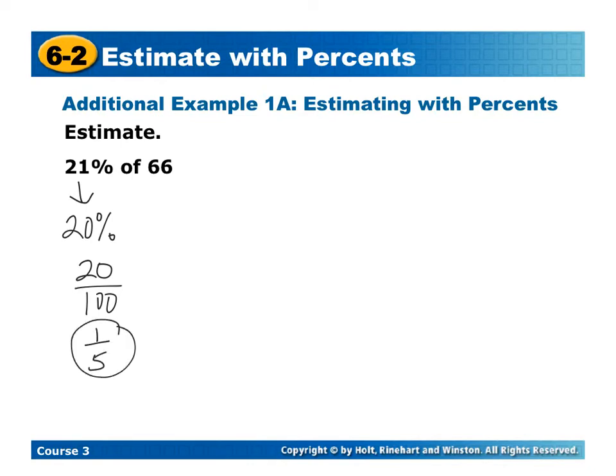The reason I'm going to use 1 fifth is because now I'm finding 1 fifth of 66. Now, 66 is not divisible by 5, but 65 is. So if I do 1 fifth of 65, it's really just 65 divided by 5, which is going to give me an answer of 13. So 21% of 66 is going to be approximately 13.